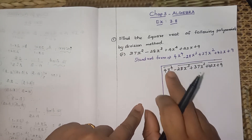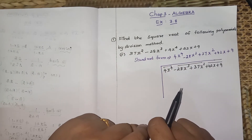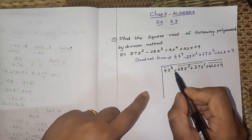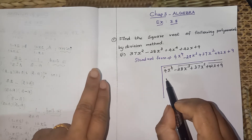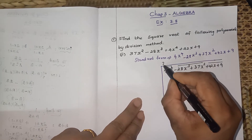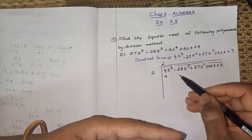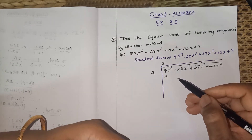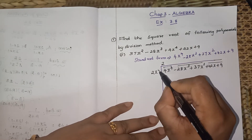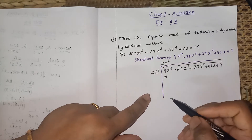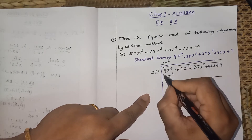Look at the first term, 4x⁴. We need a perfect square. 4 is a perfect square (2×2=4), and x⁴ is also a perfect square (√x⁴ = x²). So the square root is 2x². Write 2x² as the quotient, and 2x² × 2x² = 4x⁴. Subtract — same terms cancel.